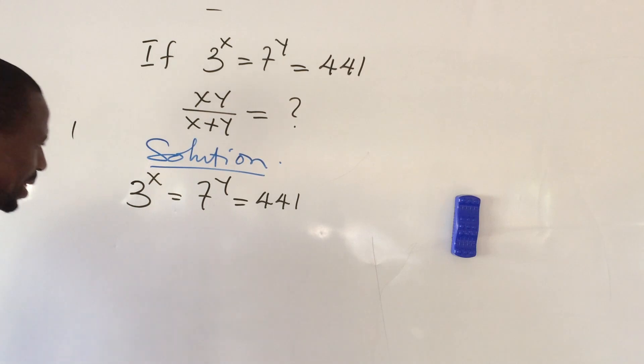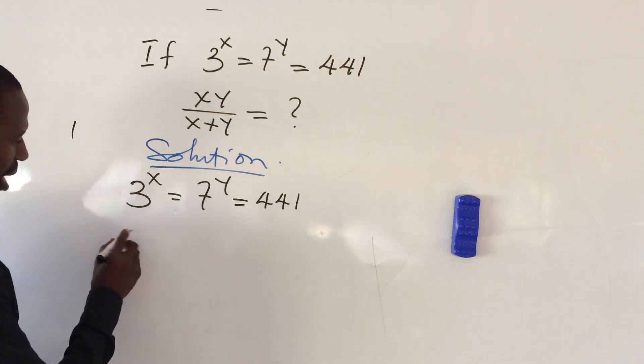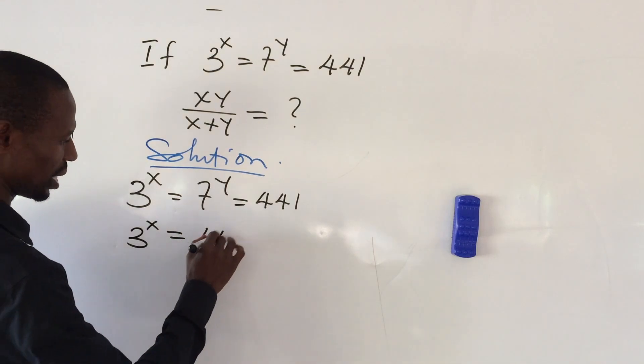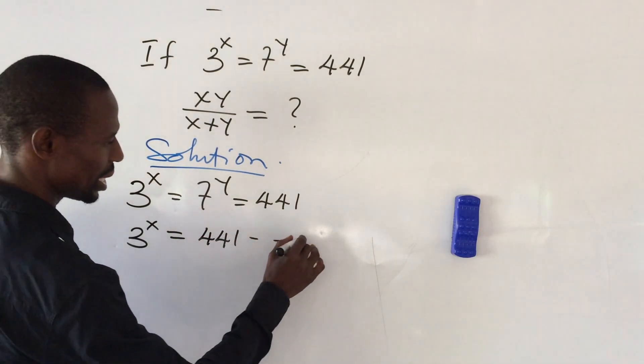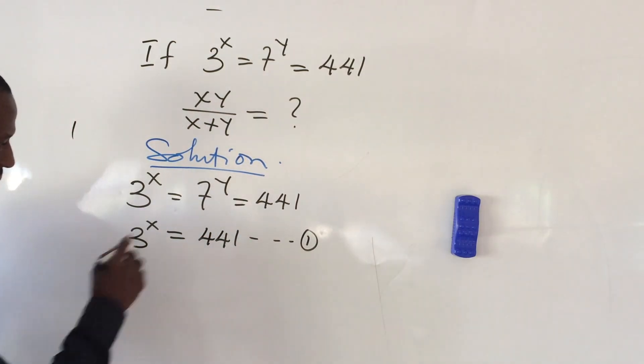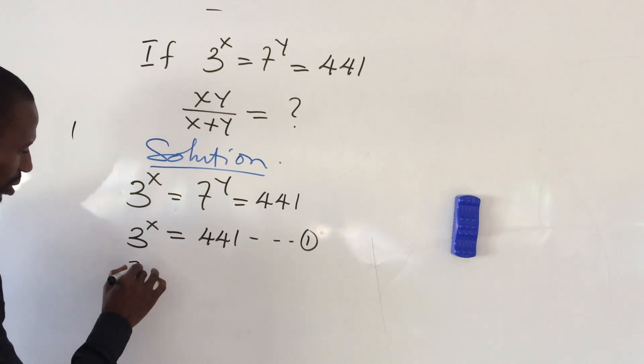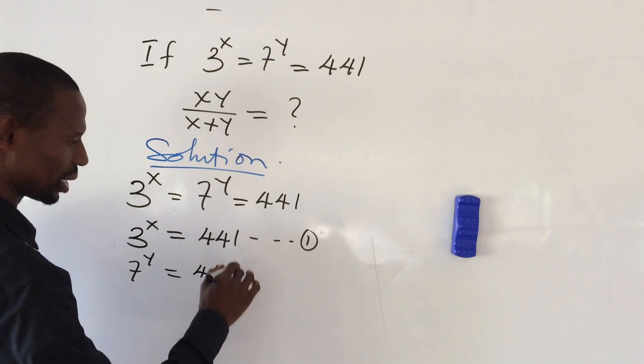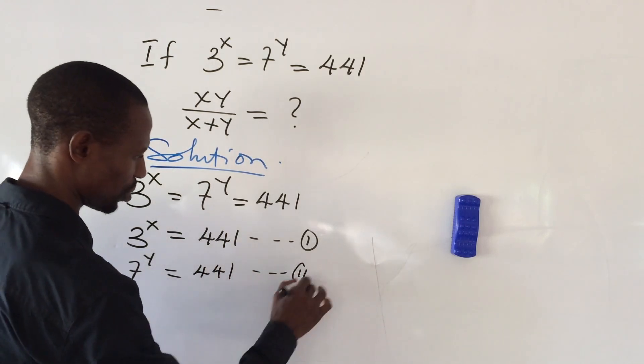So let's go ahead and write it down here. We have here 3 to the power of x equal to 441. Let's take this as our equation 1. Then also, 7 to the power of y equal to 441. Let's take this as our equation 2.